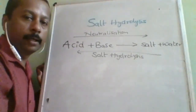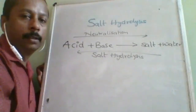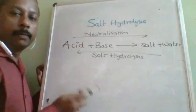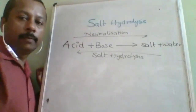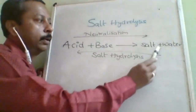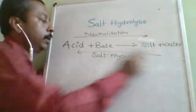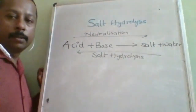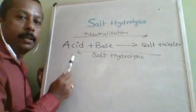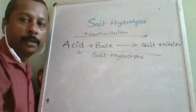The basic difference between neutralization and salt hydrolysis is that salt hydrolysis is just a reverse reaction of neutralization. In neutralization, we add acid and base and get salt and water. Here, we react salt with water and it gives us acid and base. Such a reaction is called salt hydrolysis.